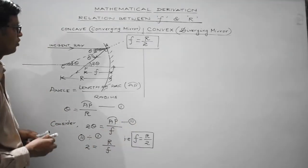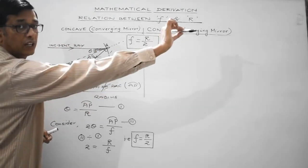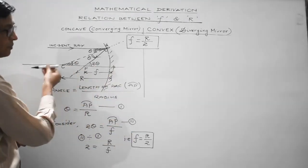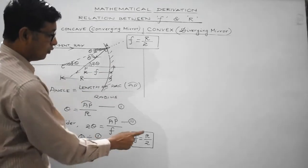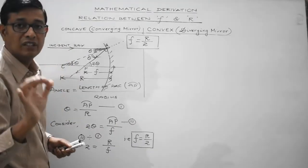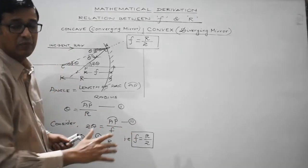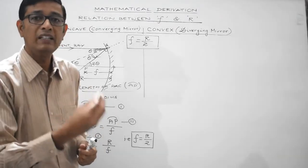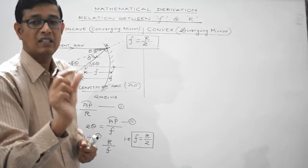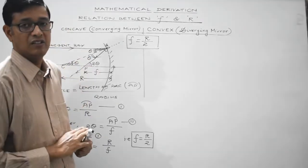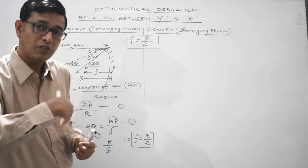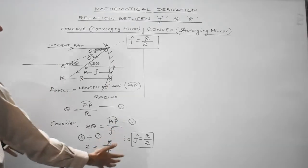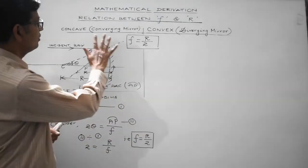As per the sign convention, the incident ray travels from left to right, while the distances PC (which is R) and PF are measured in the opposite direction. So the focal length of a concave mirror is always negative. If the focal length of a spherical mirror is given as minus 20 centimetres, the minus sign signifies that the mirror is of converging nature. Its radius of curvature will also be negative and equal to twice the focal length. This is the mathematical verification of the relationship between F and R for a concave mirror.